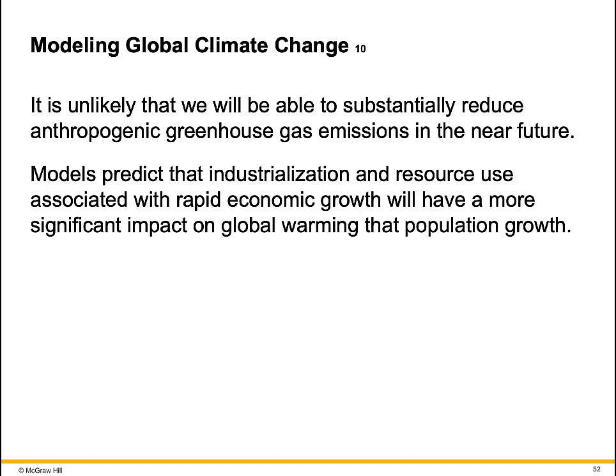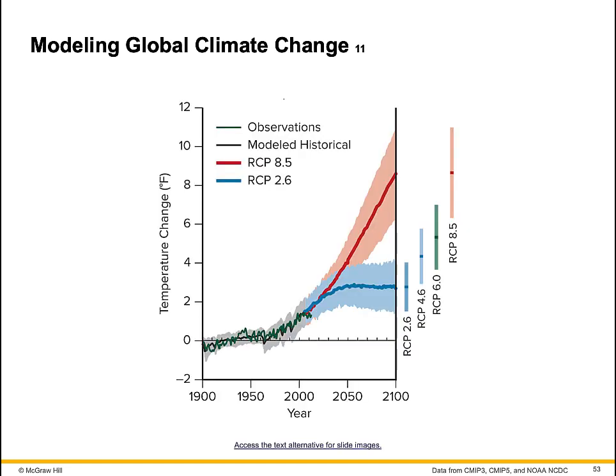It is unlikely that we will be able to substantially reduce anthropogenic greenhouse gas emissions in the near future. Models predict that industrialization and resource use associated with rapid economic growth will have a more significant impact on global warming than population growth. The results of global mean temperature change models for three scenarios are shown from 1900 to the year 2100, each corresponding to a different greenhouse gas emissions scenario. Scenario A2 assumes slow economic growth.